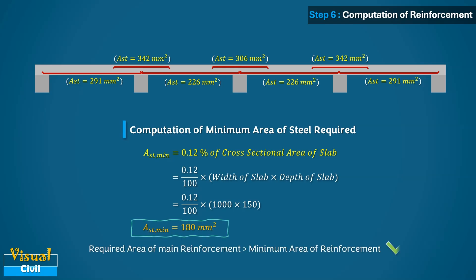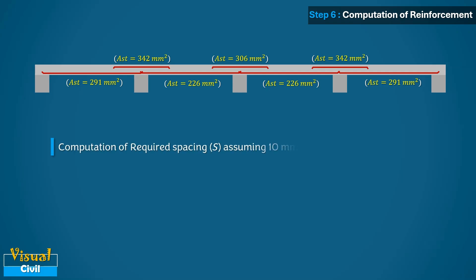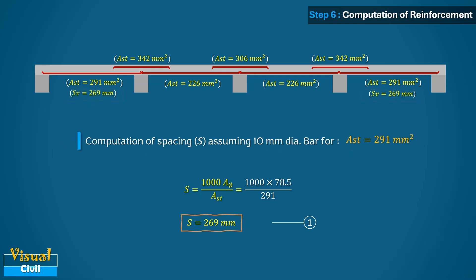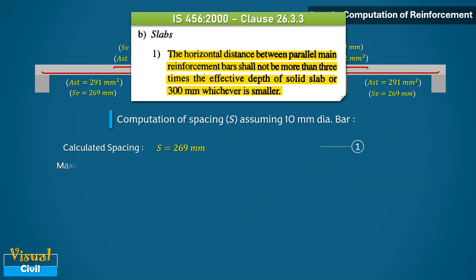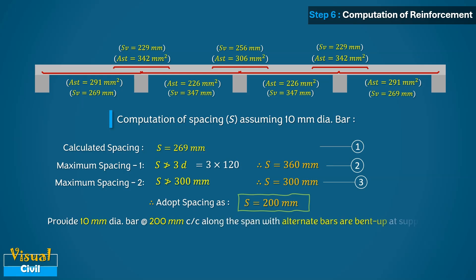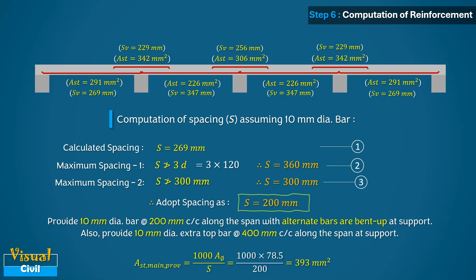The required spacing of 10 mm diameter bars is computed for all sections. The spacing at the middle of end span is 269 mm. Spacings are similarly calculated at the middle of interior span, at the support next to end support, and at the interior support. As per IS code, spacing between parallel main bars shall not exceed three times the effective depth or 300 mm, whichever is smaller. Hence, adopt 200 mm spacing. Provide 10 mm dia bars at 200 mm c/c along the span, with alternate bars bent up at support, plus extra top bars at support at 400 mm c/c to achieve 200 mm top bar spacing.